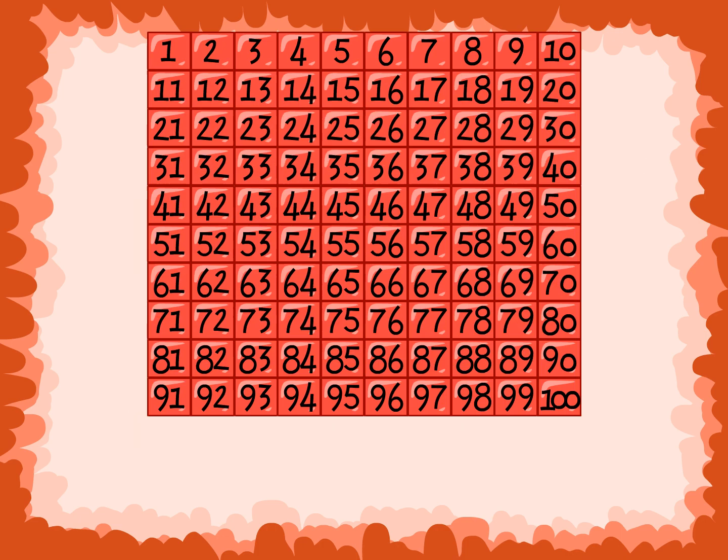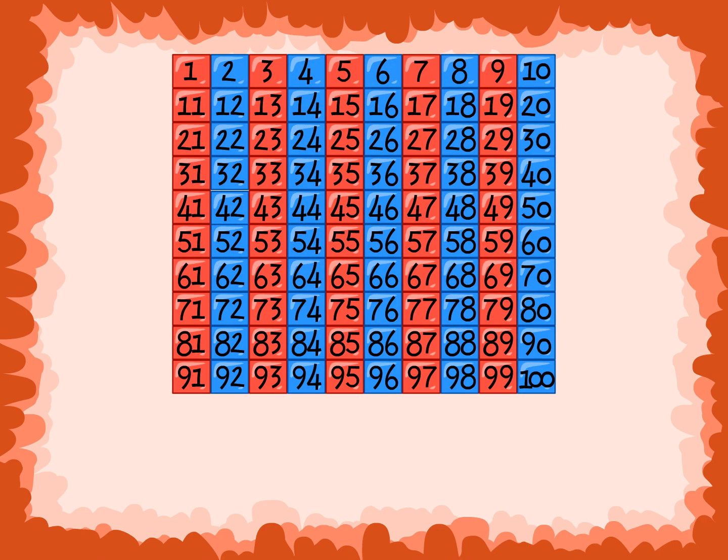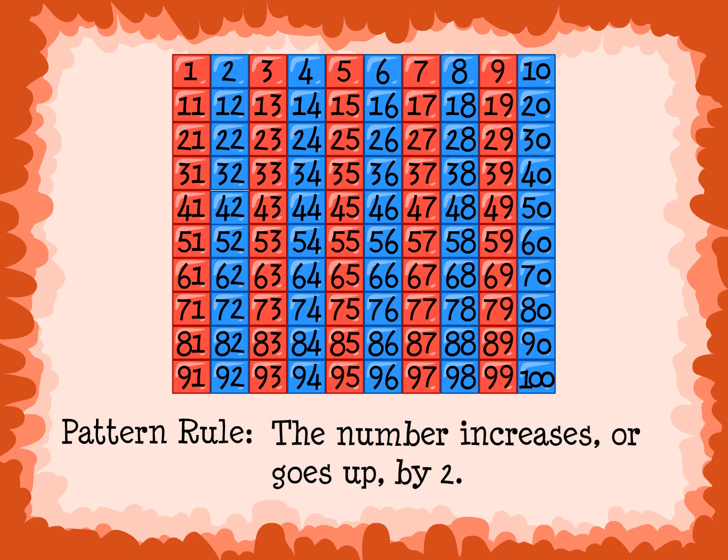When we talked about skip counting, we looked for patterns on a hundred chart. We can see a pattern when we skip count by twos. Every even number is highlighted and there is a pattern of vertical rows. We can also write the pattern rule. For this example it would be the number increases or goes up by two.